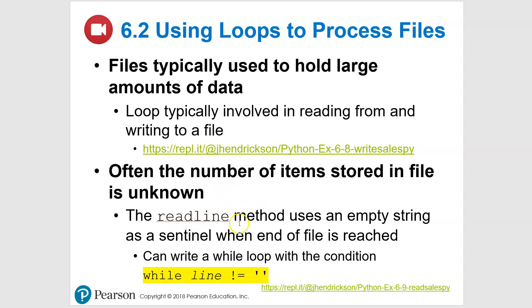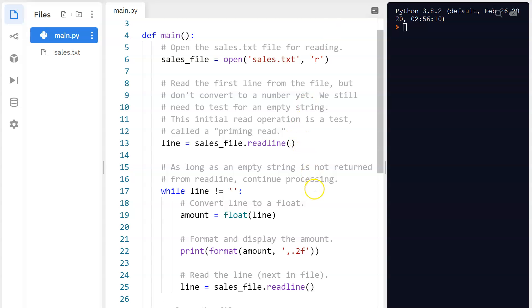Another way of doing this: if you don't know what's going on or want to use readline, you can set up a while loop with this particular condition — while line does not equal an empty string. The exclamation-point-equals means 'not equal,' and the empty string is just two quotes with nothing in between. So it's saying: while the line being read is not empty, keep going.